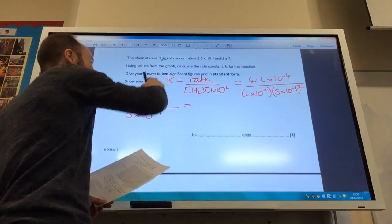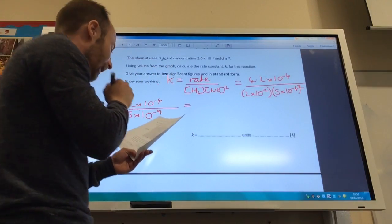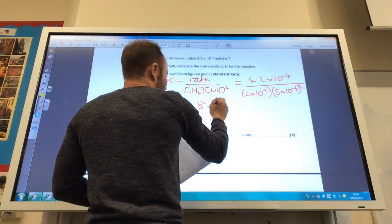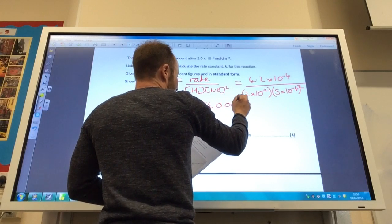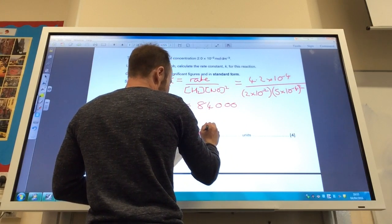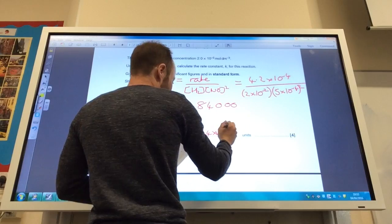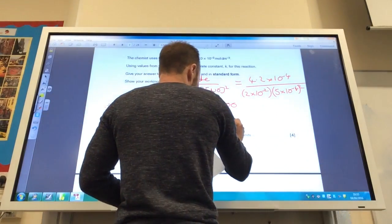And if you do that, it wants it to two significant figures. So that comes to 84,000, so that's 8.4 times 10 to the 4.